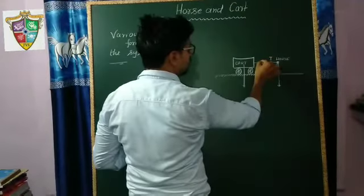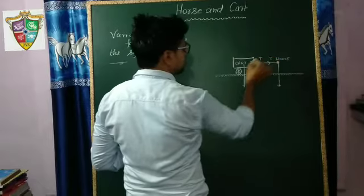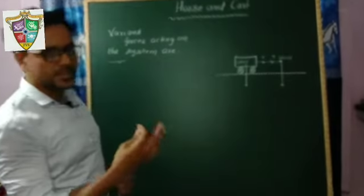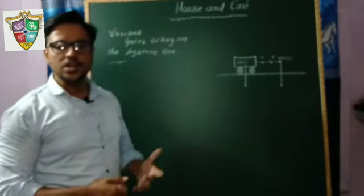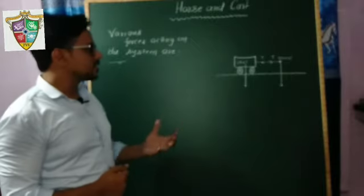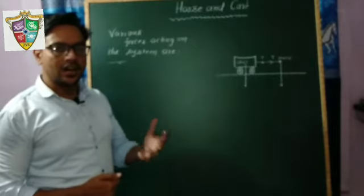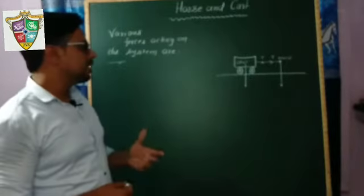Then the cart is also pulling the horse with force T. This T means tension in the string. Then how does the cart move? So we will discuss how the cart moves and how many types of forces are acting in this case.